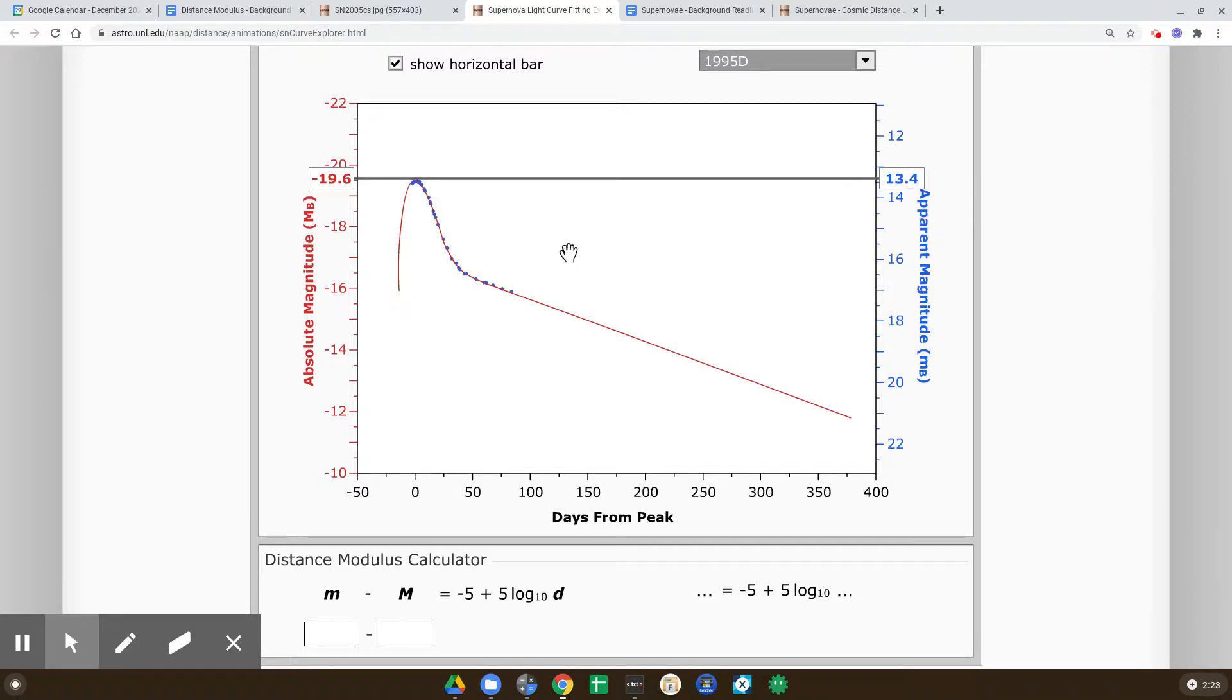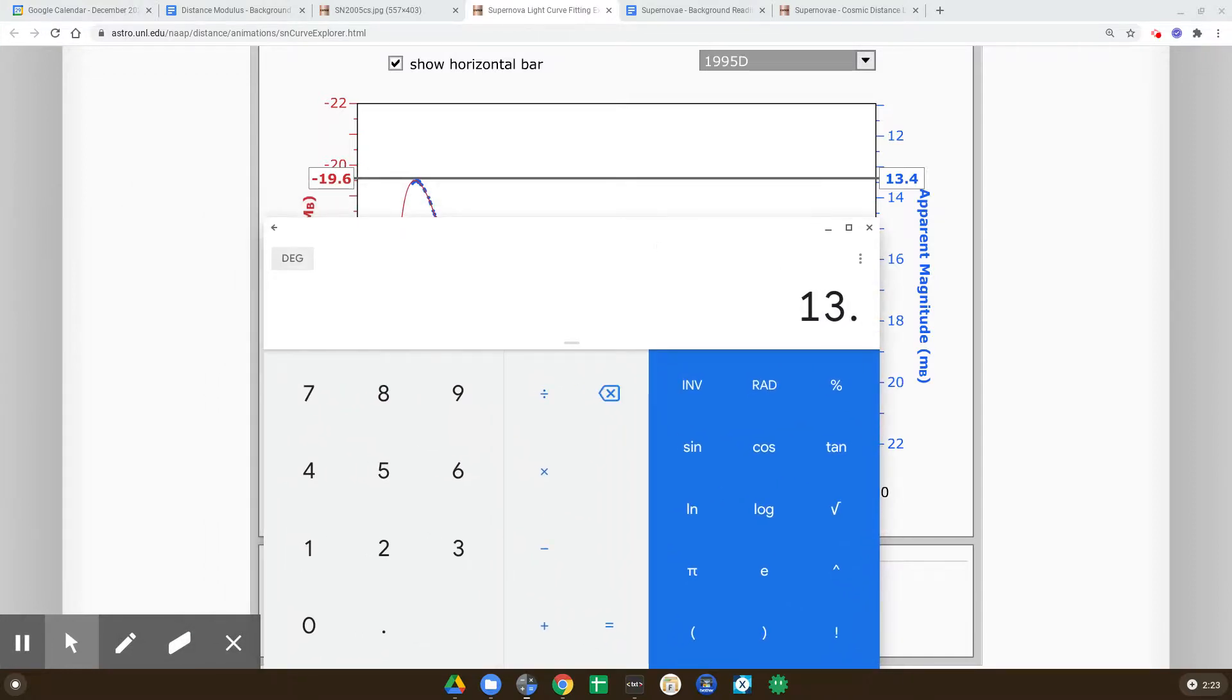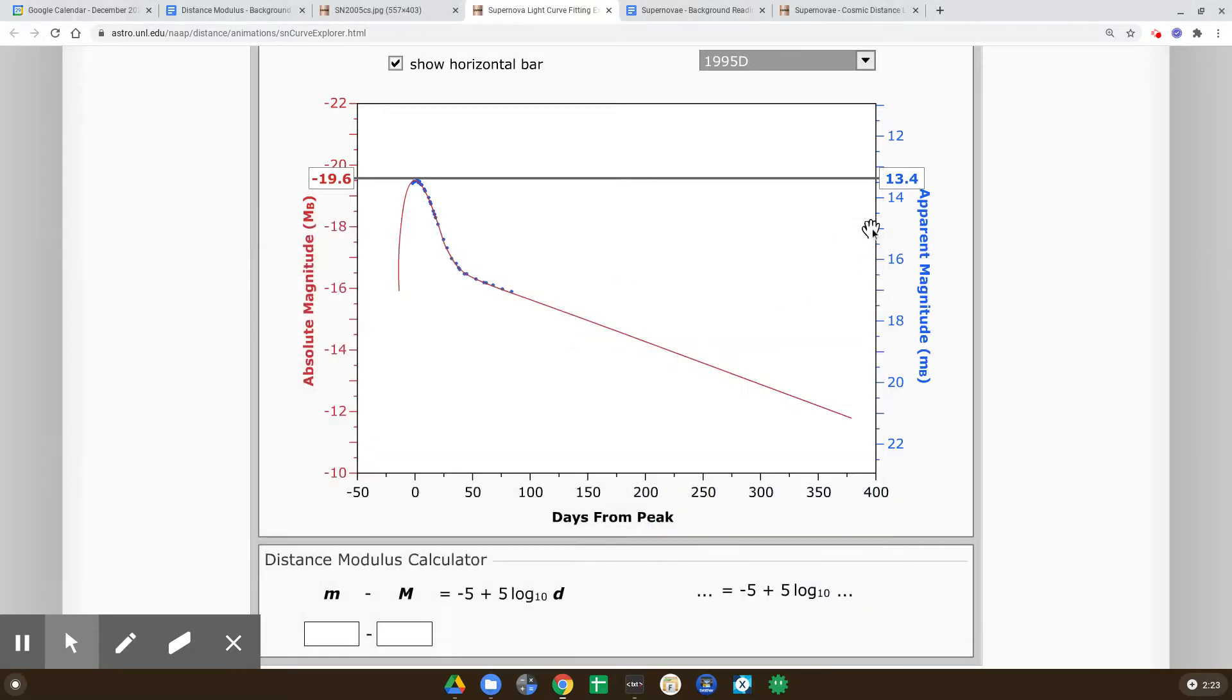negative 19.6 and 13.4. So little m minus big M, right? That's my distance modulus. In this case, I'm not good at subtractions with negatives and stuff, but that would be 13.4 plus 19.6. The distance modulus would be 33. So that would be for that particular supernova.